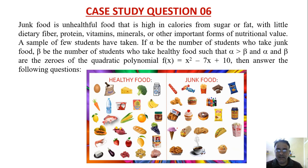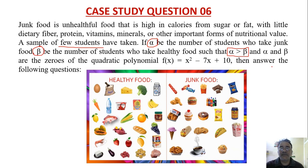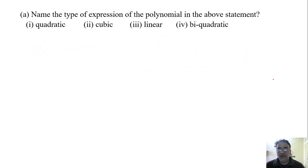Junk food is unhealthy food that is high in calories from sugar or fat, with little dietary fiber, protein, vitamins, minerals, or other important nutritional value. A sample of students has been taken. Let alpha be the number of students who take junk food, and beta be the number of students who take healthy food, such that alpha is greater than beta. Alpha and beta are the zeros of the quadratic polynomial x² − 7x + 10. Answer the following questions. First: what is the type of expression of the polynomial?